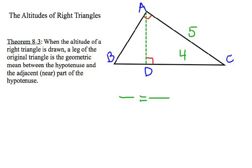The 5 leg is the geometric mean, so it goes in those two places in the proportion between the entire hypotenuse, which we will call X, and the near part, which is 4. When we cross-multiply, 4X equals 25, divide each side by 4, and X is 6.25.